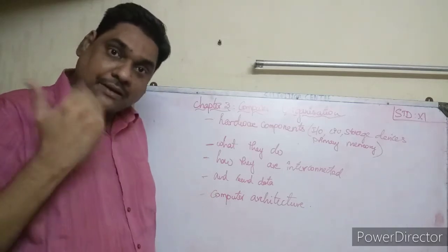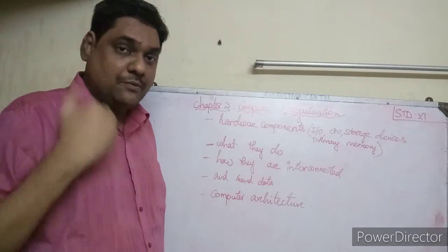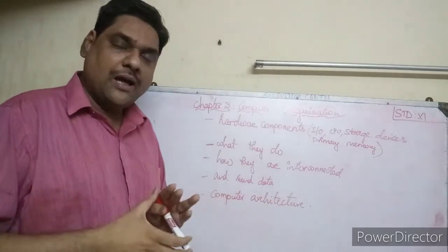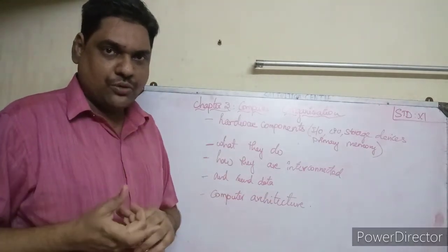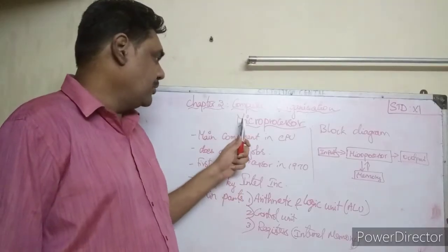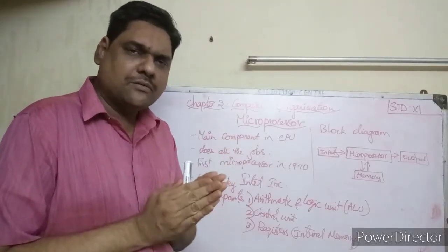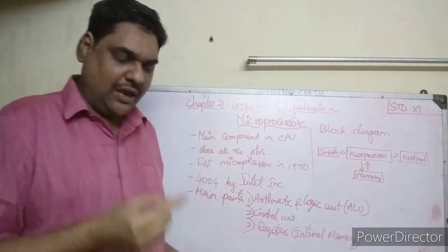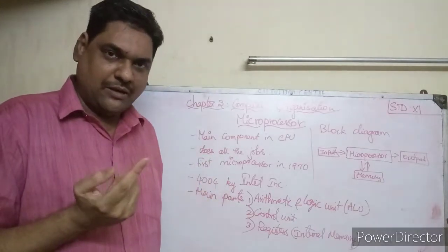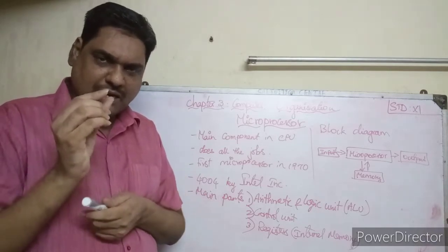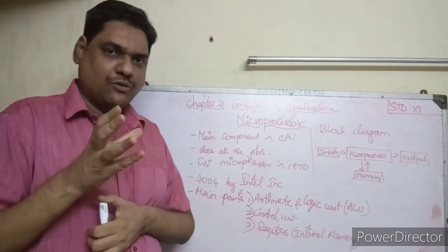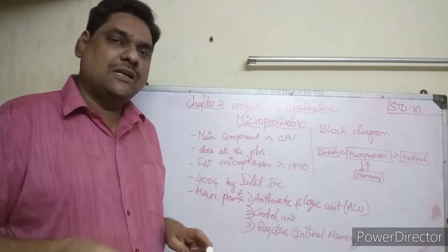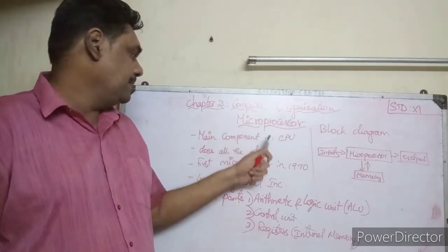Computer organization and computer architecture are advanced topics, but there is a difference between them. The main part of a computer is the microprocessor — this is the CPU. It is actually a silicon chip, similar in material to a SIM card.